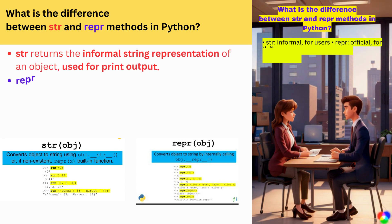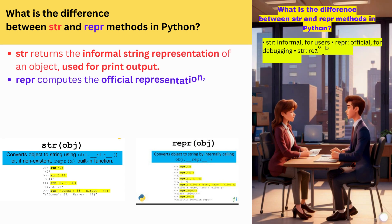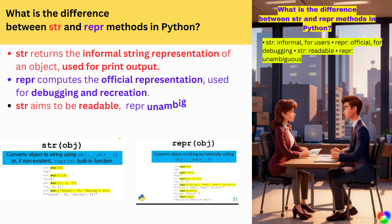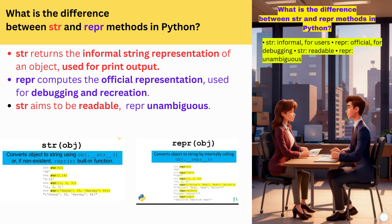What is the difference between __str__ and __repr__ methods in Python? __str__ returns the informal string representation of an object, used for print output. __repr__ computes the official representation, used for debugging and recreation. __str__ aims to be readable; __repr__ unambiguous.